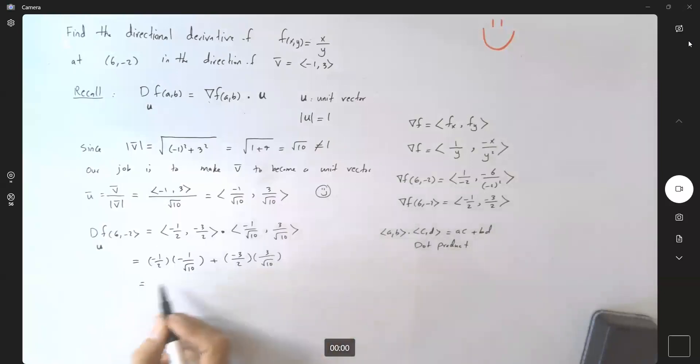Let's just try to simplify this. You get 1/(2√10) minus 9/(2√10). You get -8/(2√10) = -4/√10.